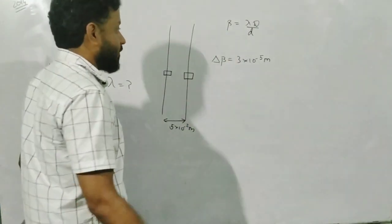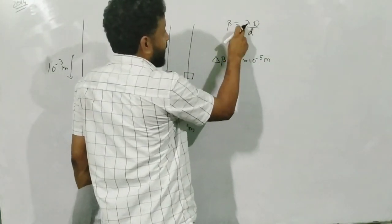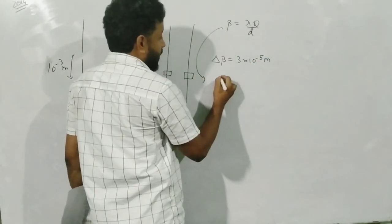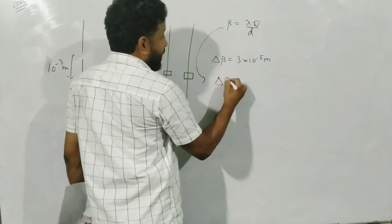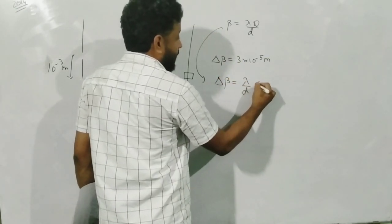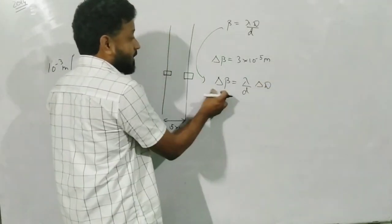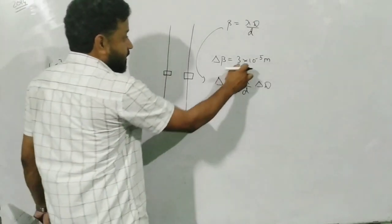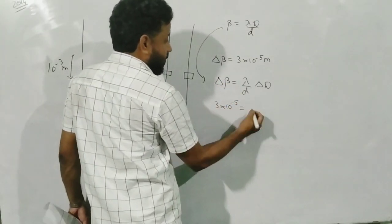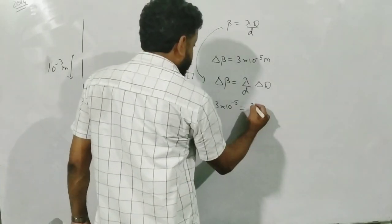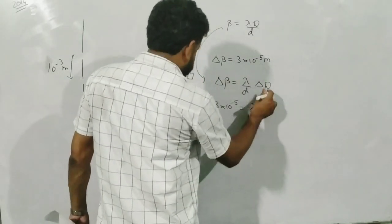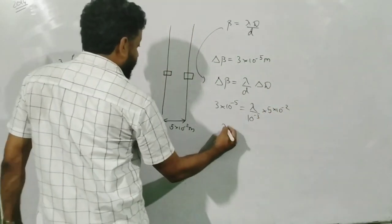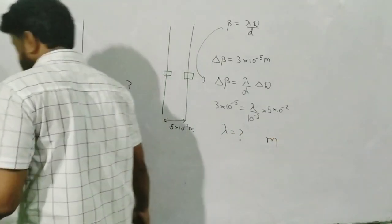Using β = λD/d, λ and small d are not changing, so the change in β comes only from the change in D. Therefore Δβ = λ × ΔD / d. So 3 × 10⁻⁵ = λ × (5 × 10⁻²) / (10⁻³). Please calculate λ from this expression and the answer will be in meters.